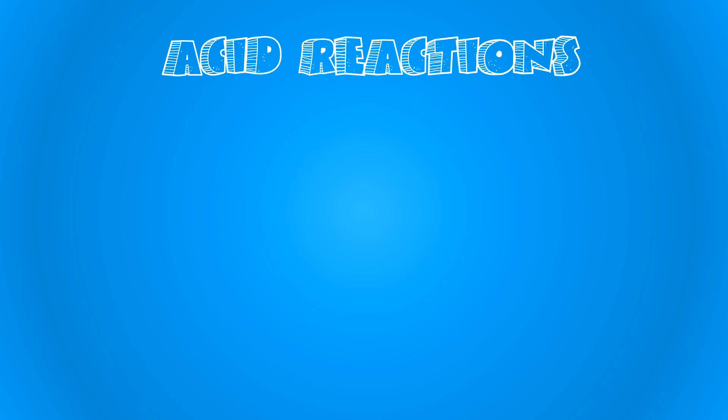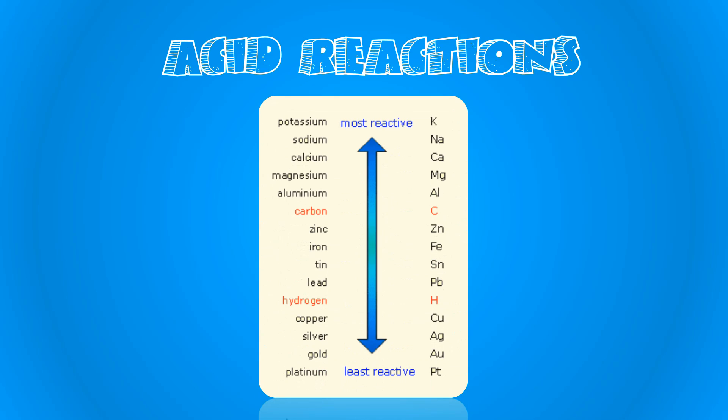The likelihood of an acid-metal reaction occurring can be predicted using a reactivity series. If the metal is above hydrogen in the reactivity series, then it will react with the acid to form the salt and hydrogen gas.